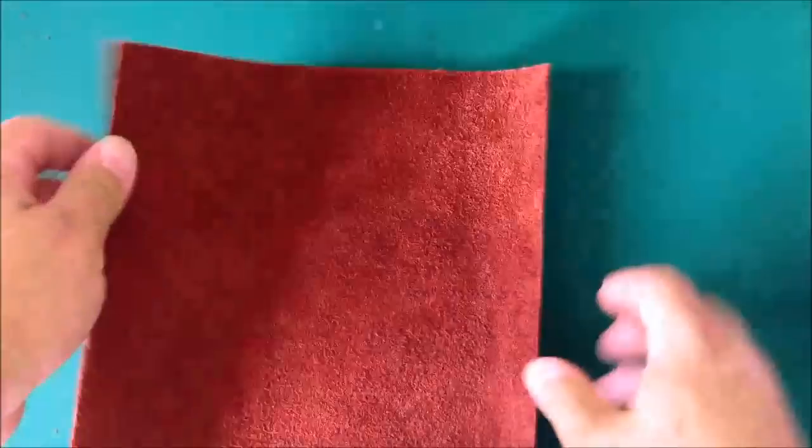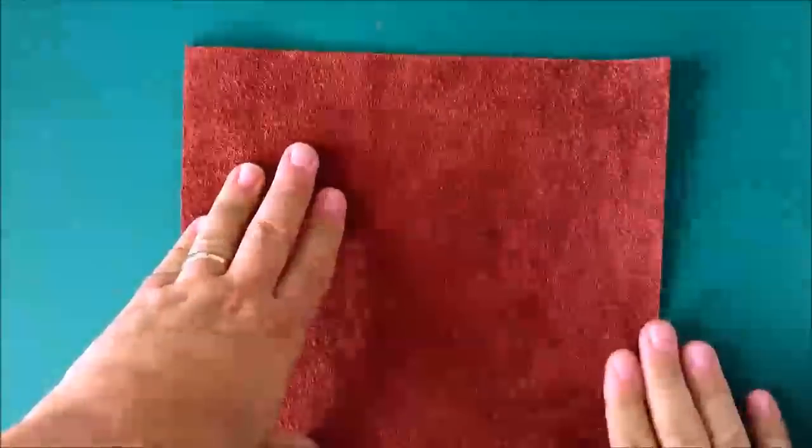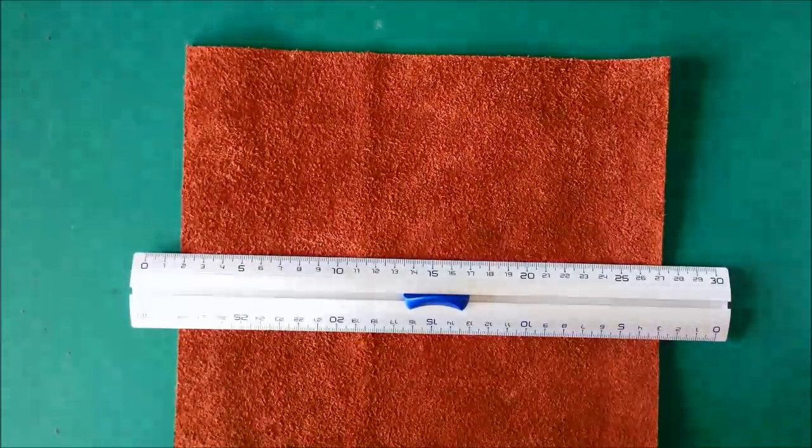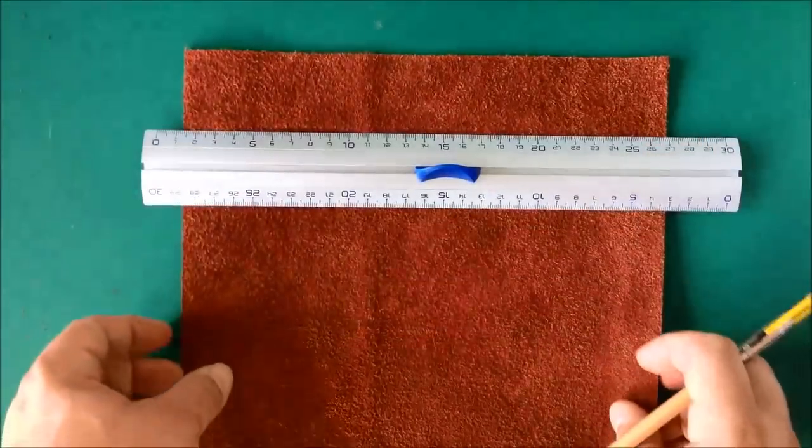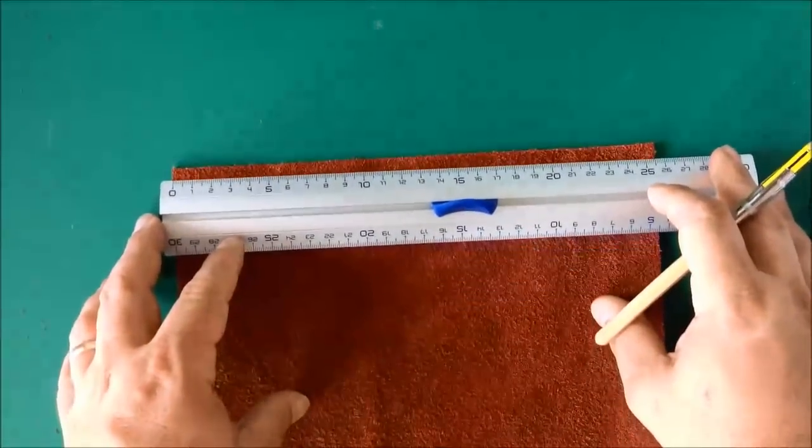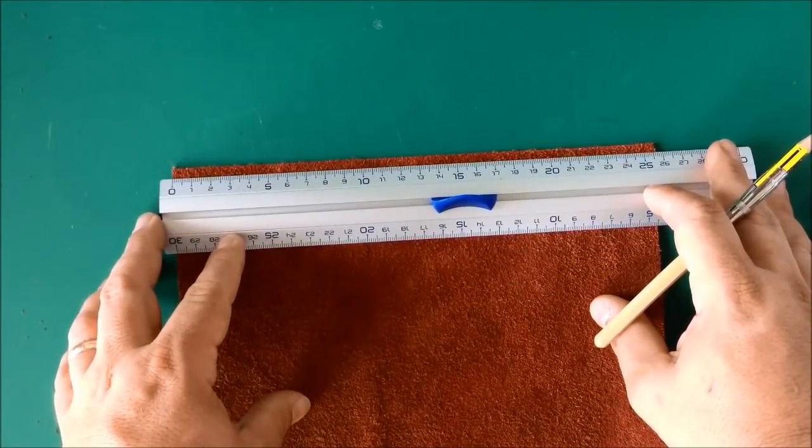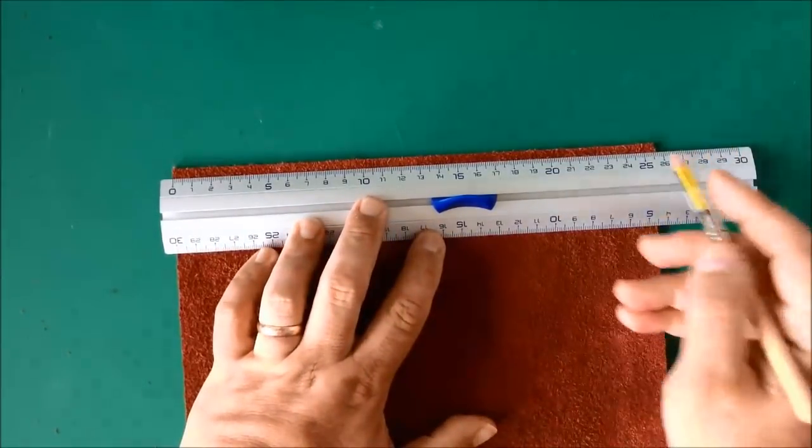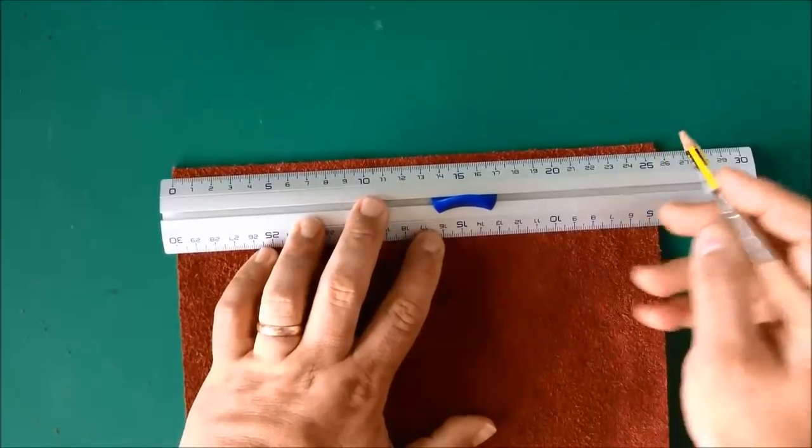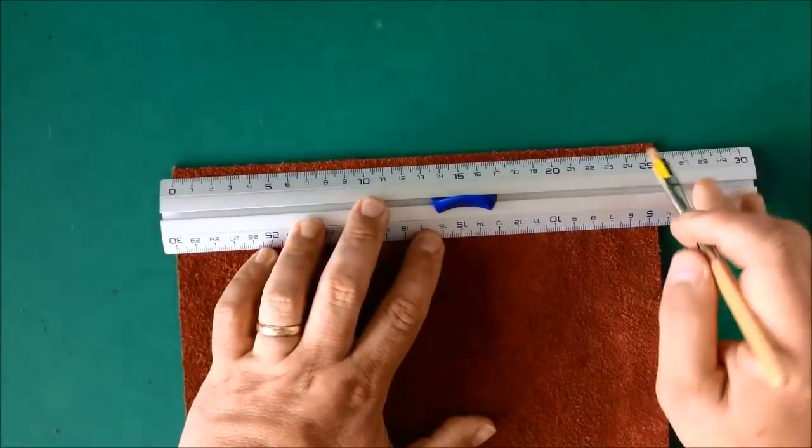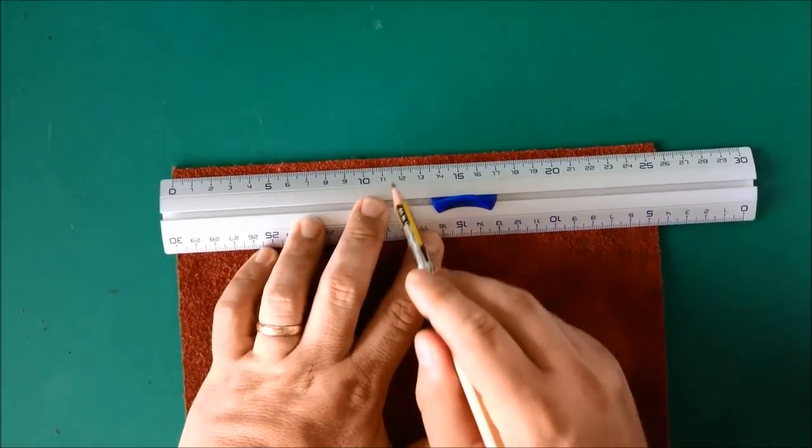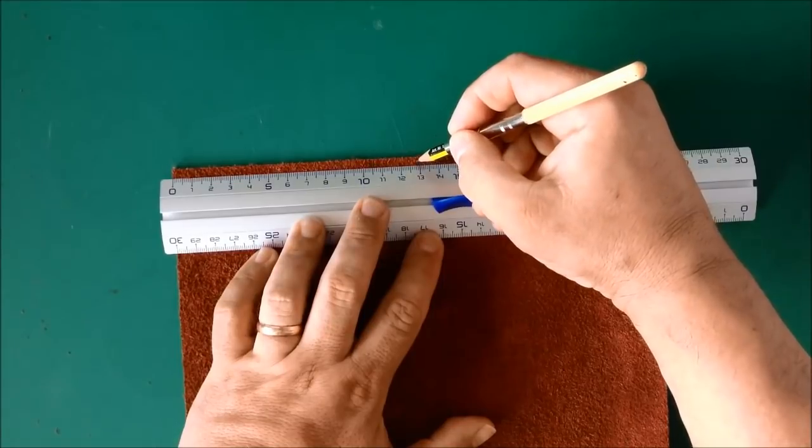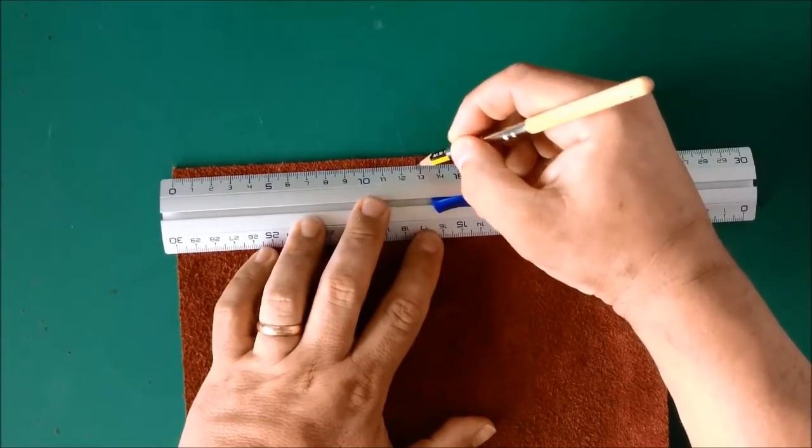Now next we're going to punch some holes in this to fit the elastic. Now at this point having gone to the lengths of very carefully cutting out a nice square piece you really want to take your time and make sure that this is done exactly right. You're going to look for the exact centre. Now the exact centre is at about 12.8cm roughly. Going to make quite a prominent mark there.